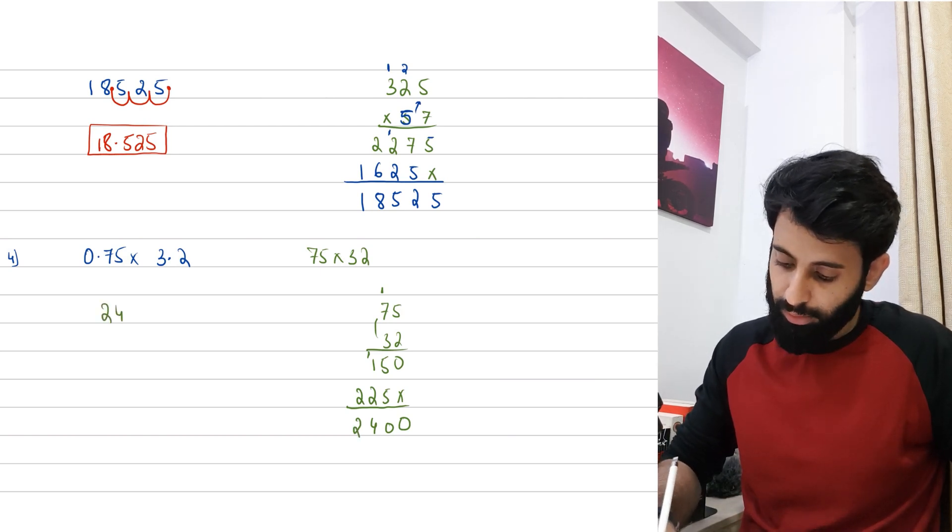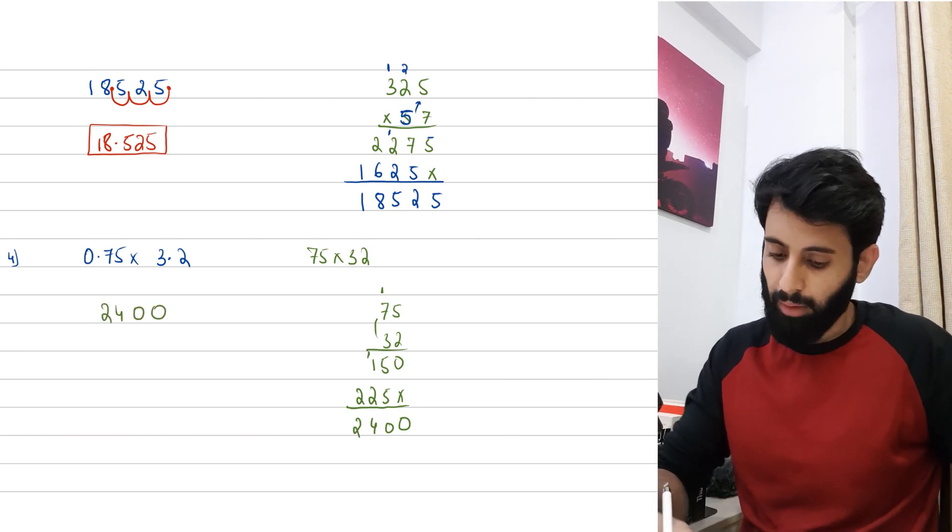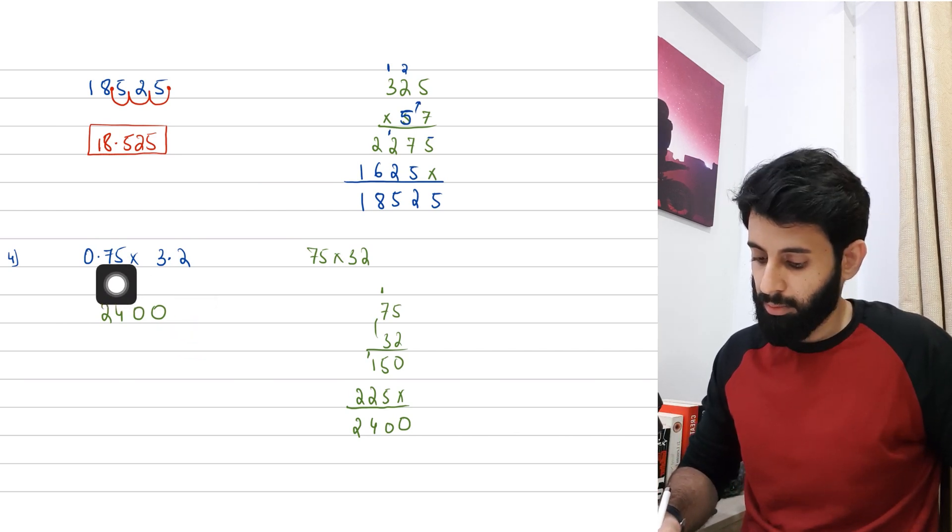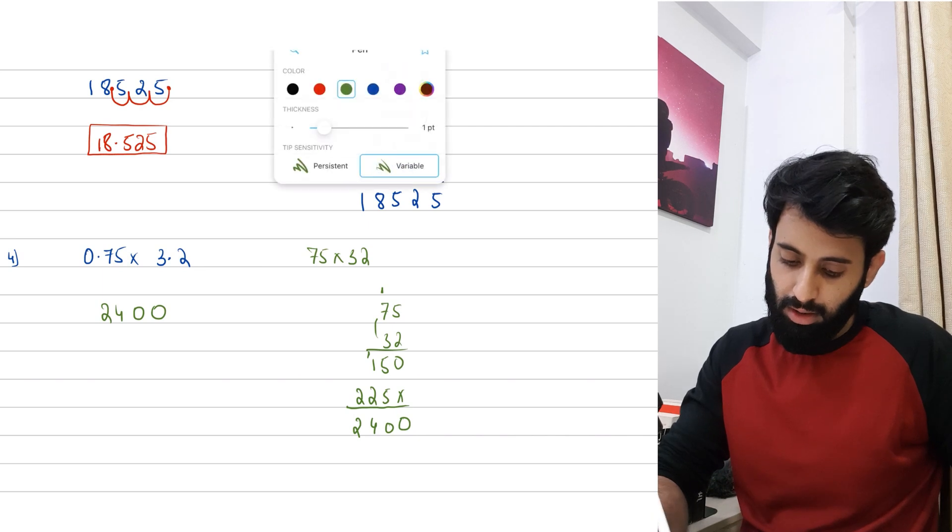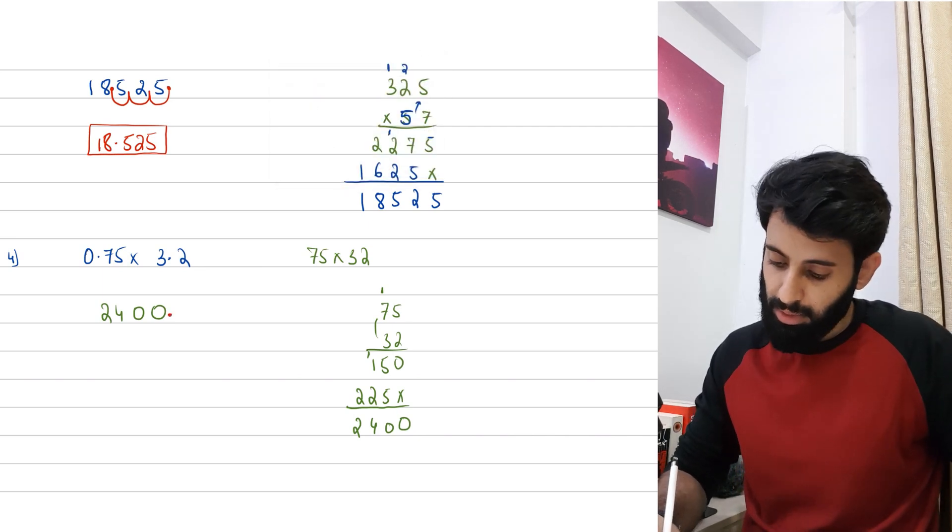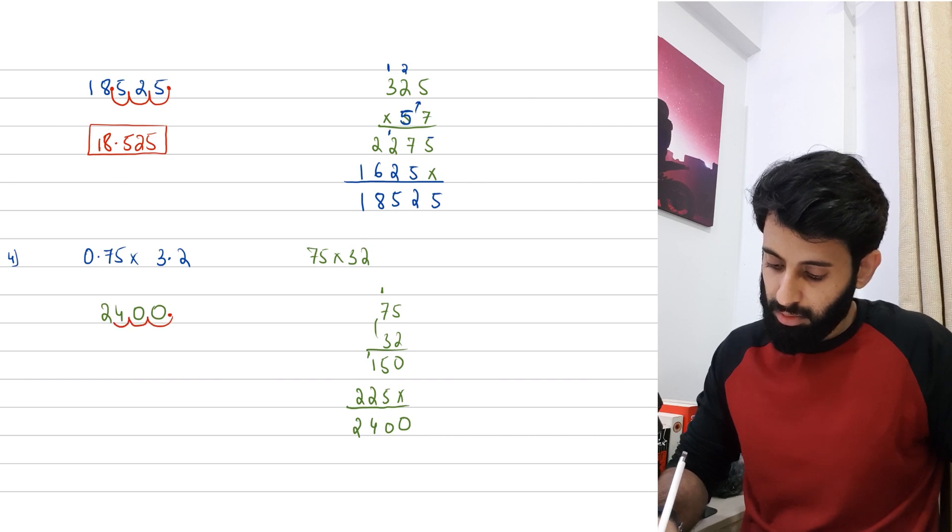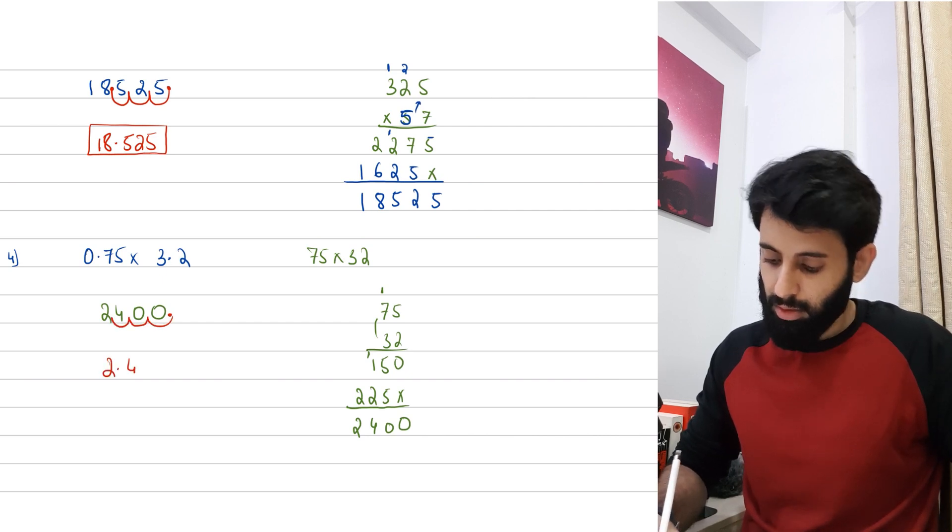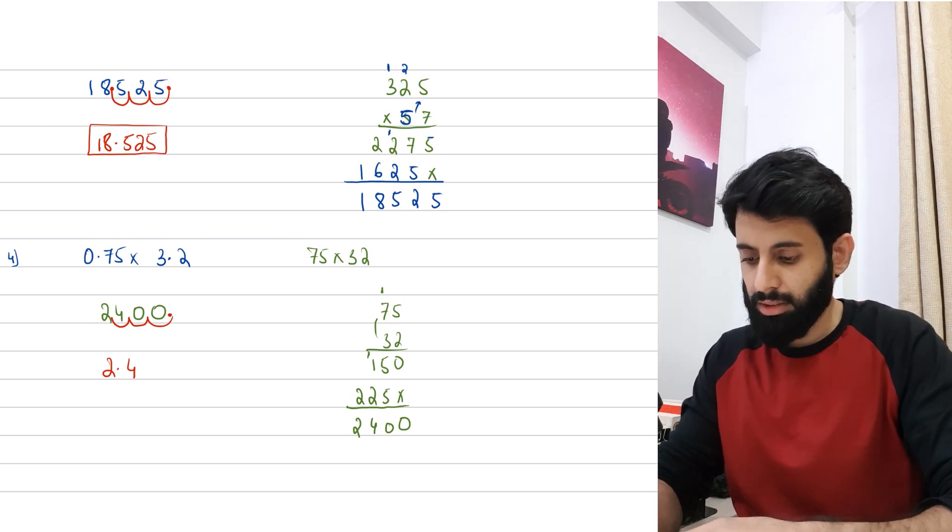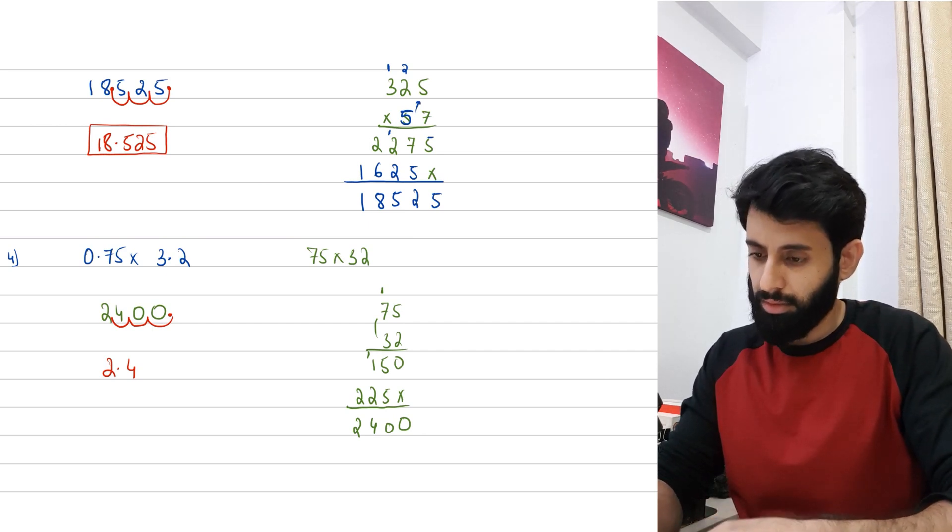Now we sum them up: 0, 5 plus 5 is 10, 2 plus 1 is 3, 3 plus 1 is 4, and then we have the 2. So I'm looking at 2400. Now I need to place the decimal. We have 1, 2, and 3 decimal places total, so the decimal which is right over here I'm going to take it three places backwards - 1, 2, 3. So my final answer is 2.4. Let's check it: 0.75 times 3.2 is in fact 2.4.